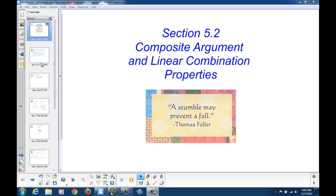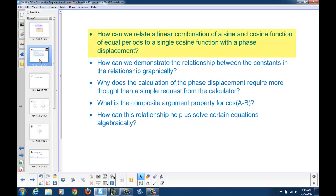At the end of this section, you should be able to answer these questions. How can we relate a linear combination of a sine and cosine function of equal periods to a single cosine function with a phase displacement? How can we demonstrate the relationship between the constants and the relationship graphically? Why does the calculation of the phase displacement require more thought than a simple request from the calculator? What is the composite argument property for cosine of A minus B? How can this relationship help us solve certain equations algebraically?